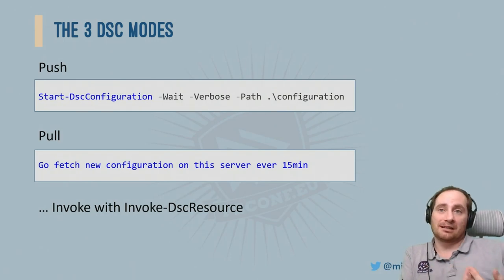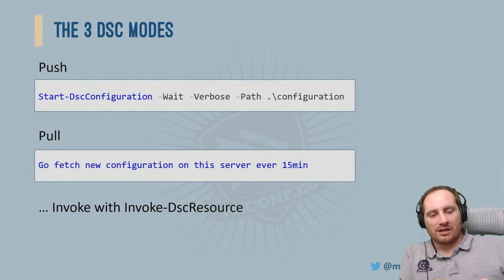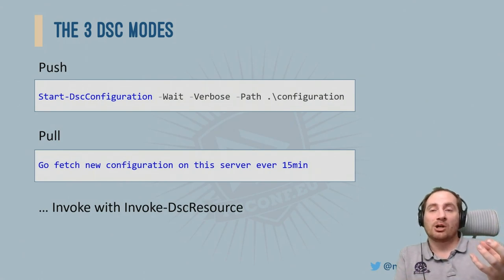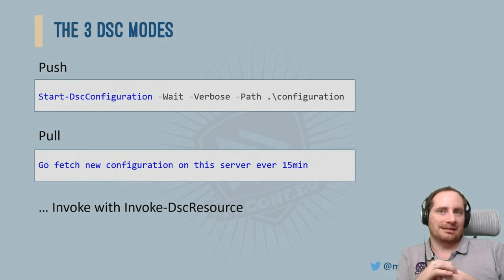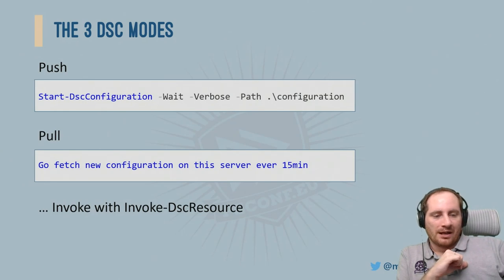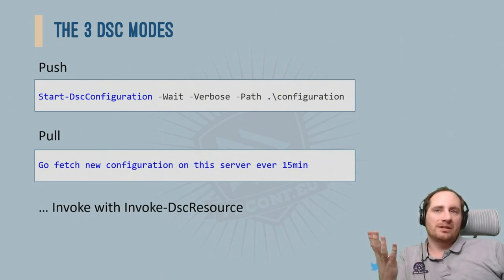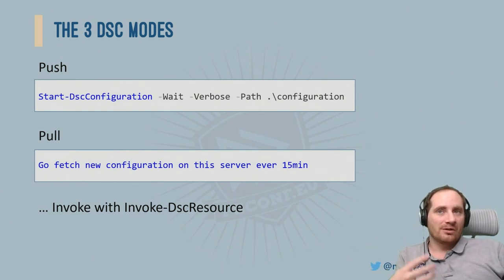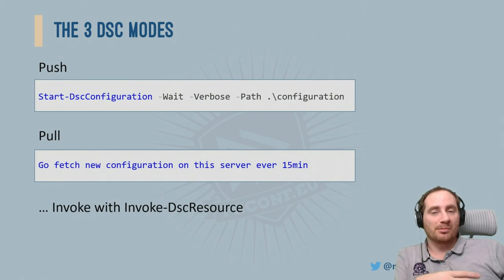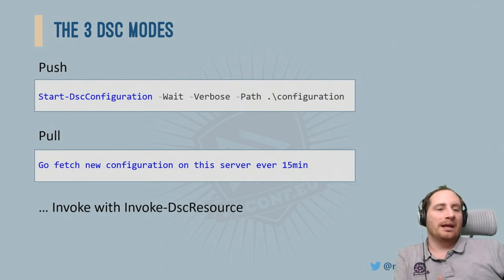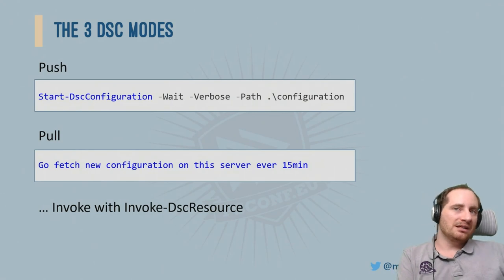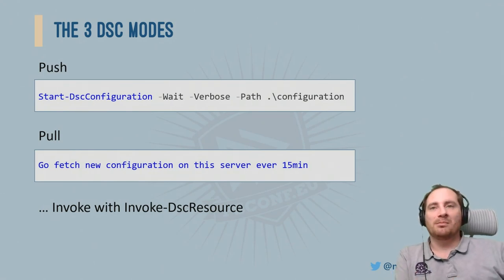Many people are using Invoke-DSCResource without knowing it. The idea is you can still use DSC as the technology using Invoke-DSCResource — it's not an agent, not the LCM, just a way to say: you've got a resource, use it to Get, Set, or Test. If you want to configure SQL Server or install and configure SharePoint, all of that is something you can automate. But if you look at DSC resources online, they already provide a lot of features — so why rewrite them yourself?